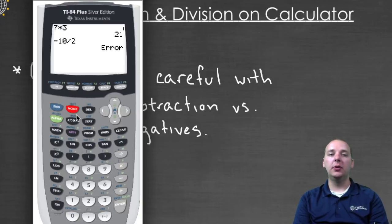So all you would need to do instead is to do negative ten divided by two, and you'll get your answer.